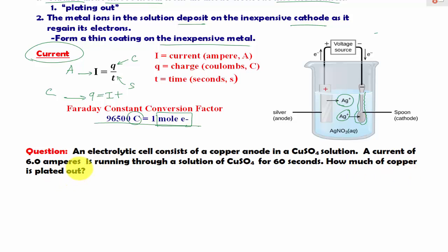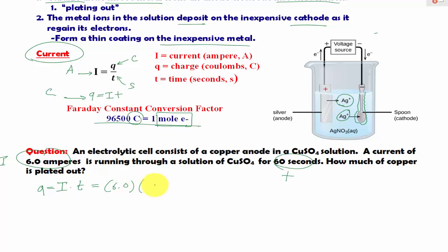To start solving this problem, we first have to find Q. We need to know about current and time. In this case, this is our time, and this is our current in amps. So our Q is equal to current times time, which is 6.0 times 60 seconds. That gives us 360 coulombs.